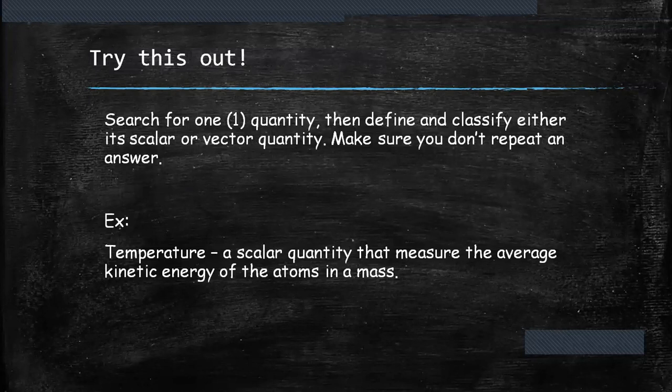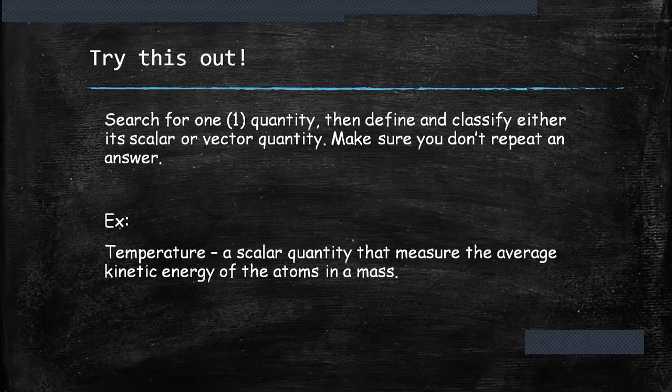Also, try this out. Search for one quantity, then define and classify whether it is scalar or vector quantity. For example, temperature, a scalar quantity that measures the average kinetic energy of the atoms in a mass. Make sure that you don't repeat the answer of your classmate.